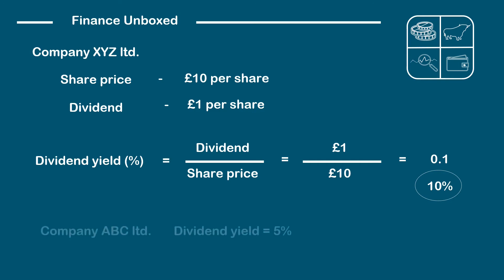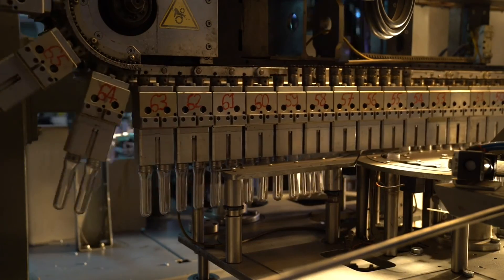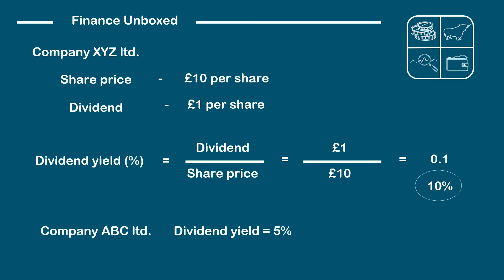Well, not necessarily. It may be the case that the company with the 5% dividend yield is wanting to invest in some property or machinery down the line that can help it grow in the long run. Hence, dividends might be held back by the board of directors, causing it to have a lower dividend yield.